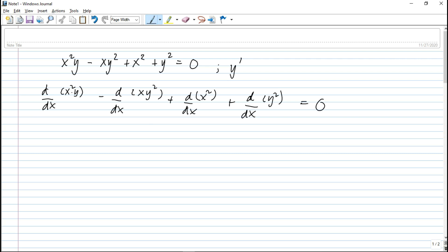Now, this is a derivative of a product. Kung i-recall natin, if you have this function uv, the derivative of uv is equal to u dv plus v du. Copy the first, differentiate the second, plus copy the second, differentiate the first.